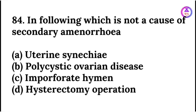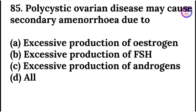Which is not a cause of secondary amenorrhea? Imperforate hymen. Polycystic ovarian disease may cause secondary amenorrhea due to excessive production of androgens.